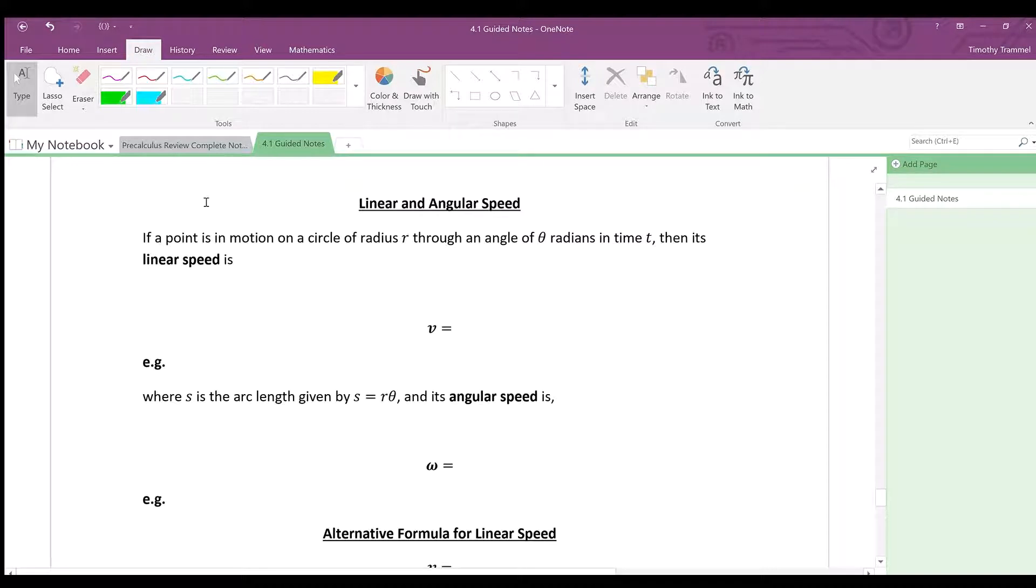If a point is in motion on a circle of radius r through an angle θ radians in time t, then its linear speed is given by V equals S over T. You already know this formula for linear speed. The only difference is you're used to S being distance—S is still distance, it's just distance along the arc. An example of linear speed would be the speed of a car. When we measure the speed of a car going down a road, we do it in miles per hour.